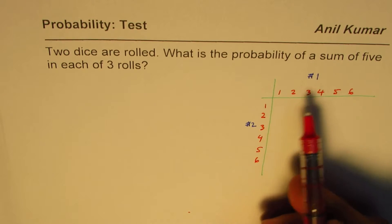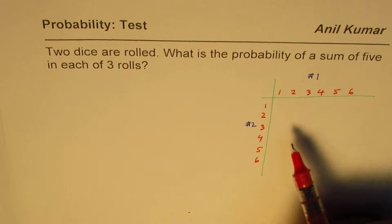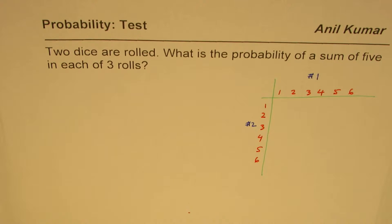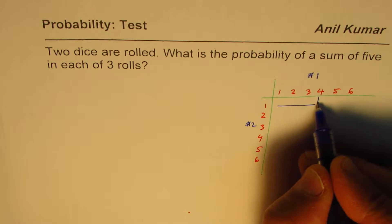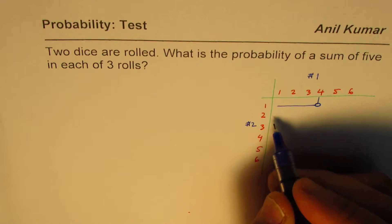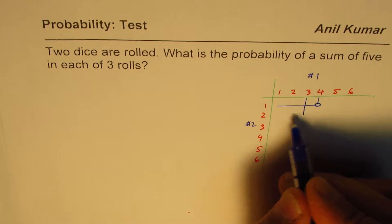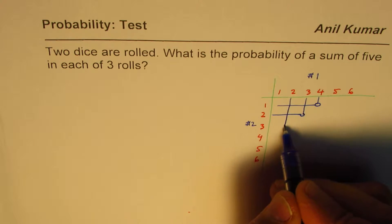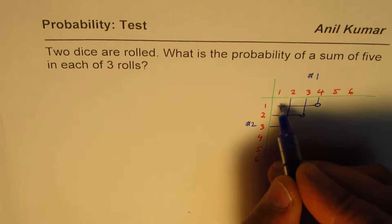Now what is the probability to get sum of five? So sum of five you can get when the combinations are one and four, this is one combination, or it is two and three, or it is three and two, or it is four and one.